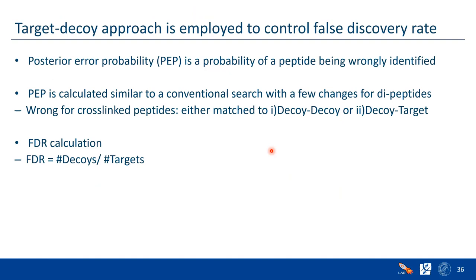For target-decoy FDR, we calculate posterior error probabilities similar to conventional searches but with a few changes: instead of peptide length, we introduce a partial score; and instead of using the missed cleavage number, we use the largest missed cleavage number between the two peptides. For wrong hits in cross-link peptides, we say they could be decoy-decoy or decoy-target. FDR calculation is otherwise similar to conventional — number of decoys divided by number of targets — and we calculate FDR separately for each cross-link product type: monolink, inter-peptide, and single peptides.